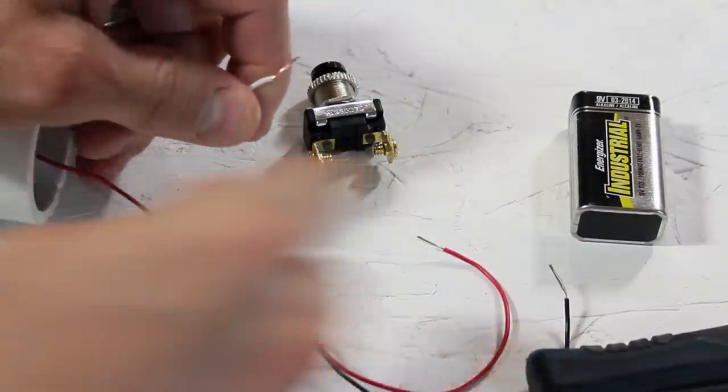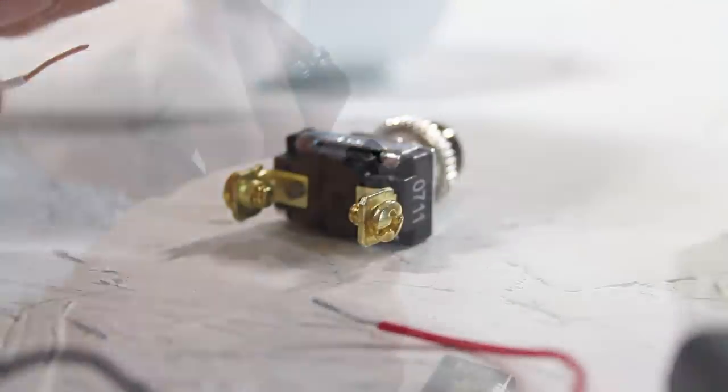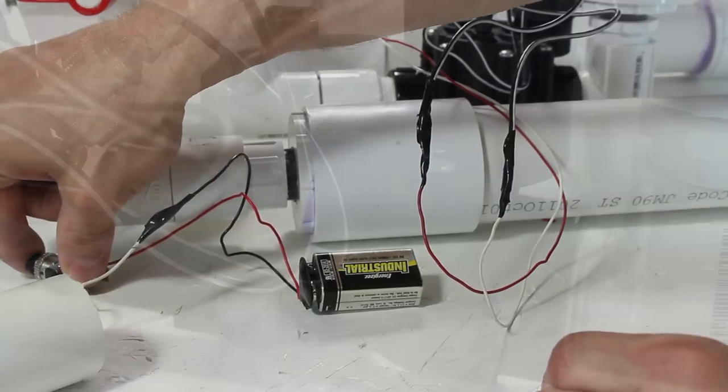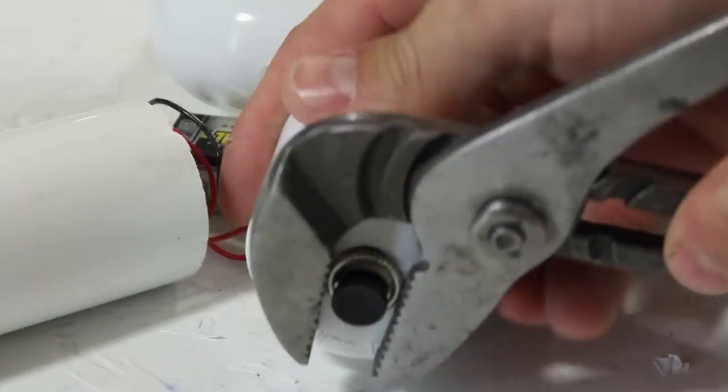I'll wire the momentary switch in series with the battery and sprinkler valve, then give it a quick test to verify it's all working correctly. Perfect, it's all working great, so I'll secure the switch and tuck the battery and wires into the detonator body.